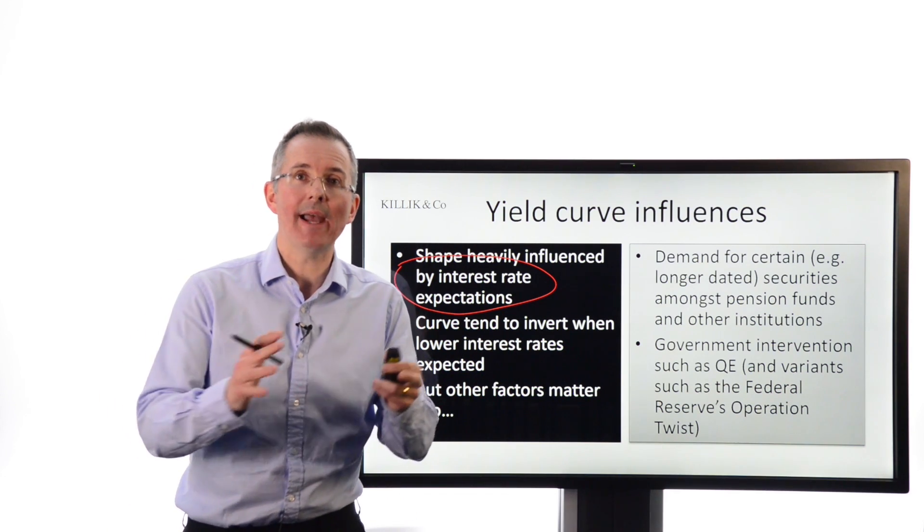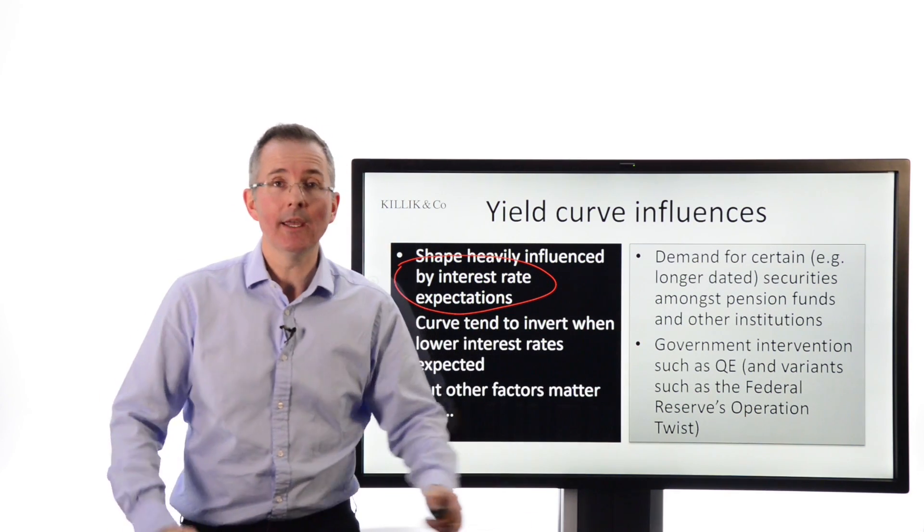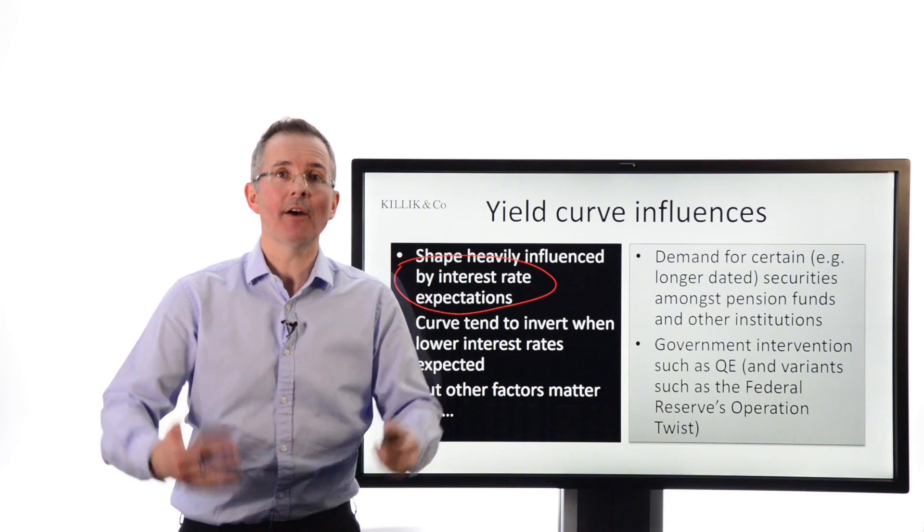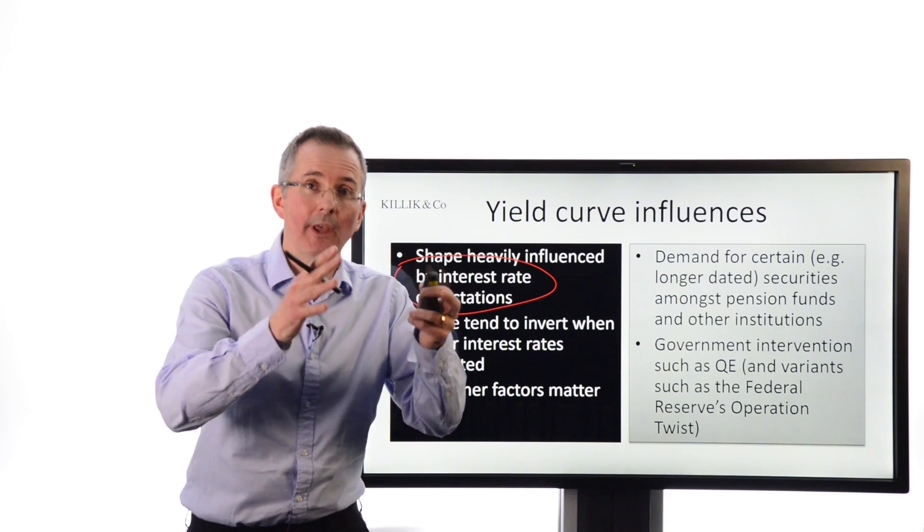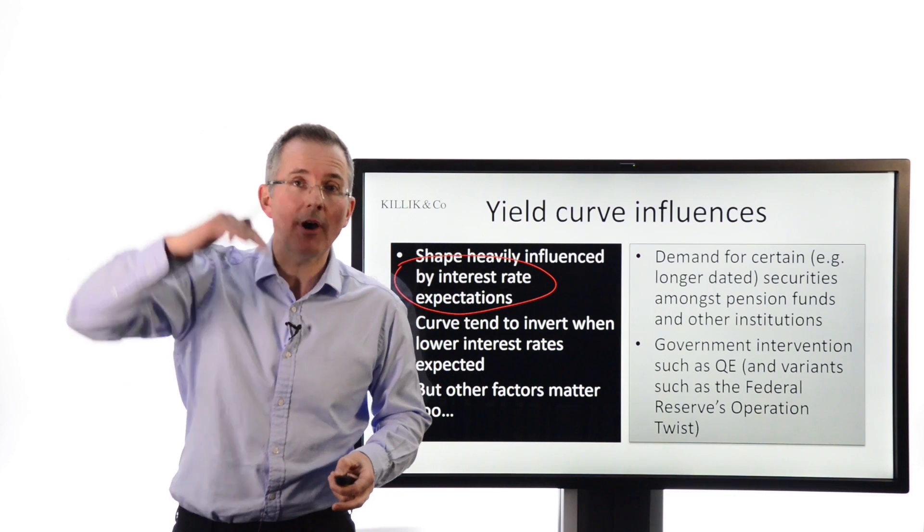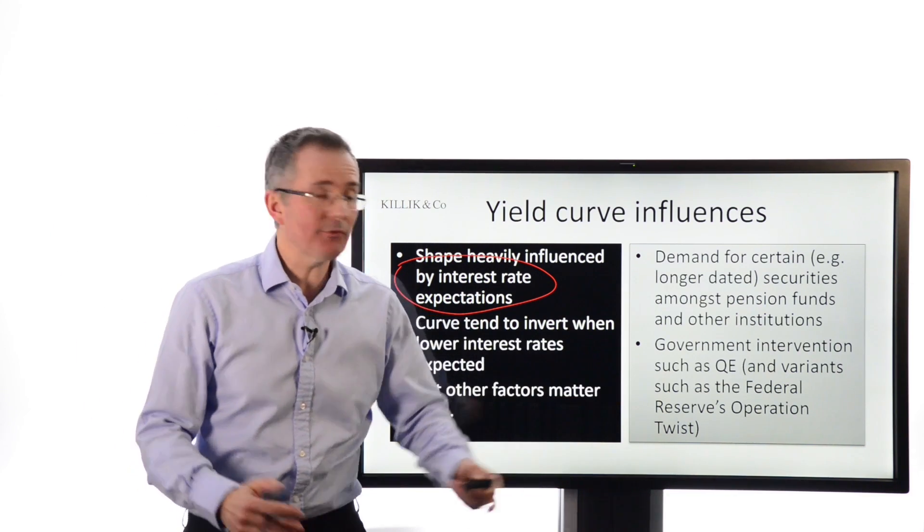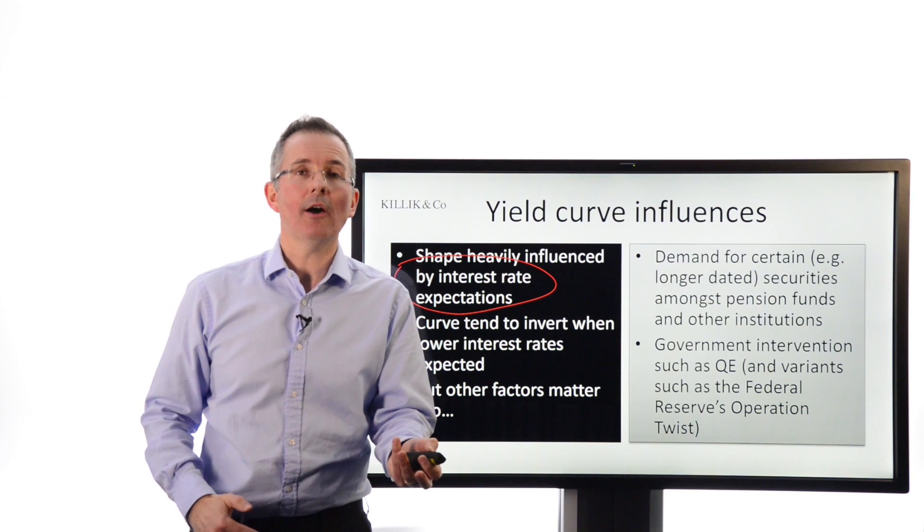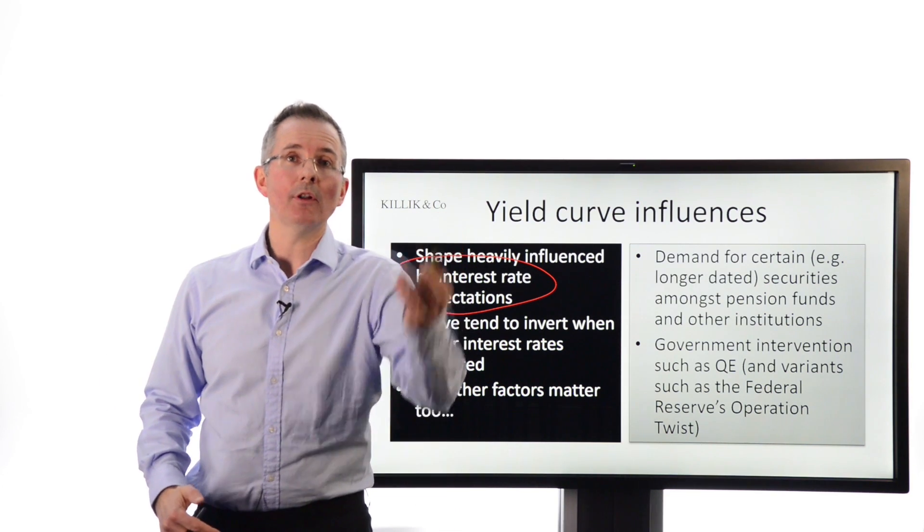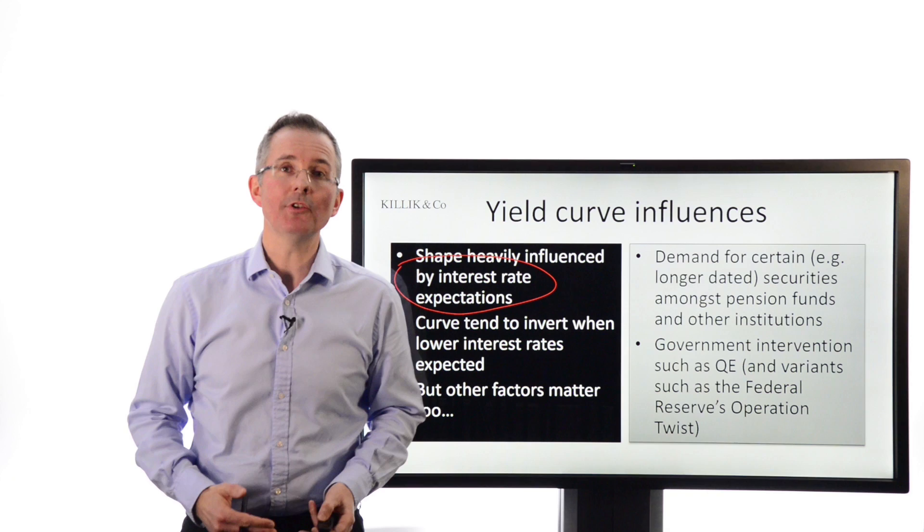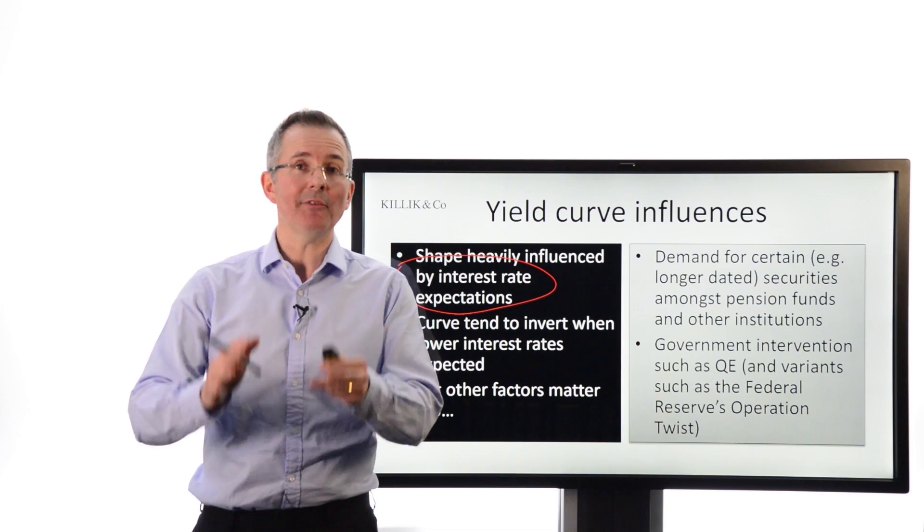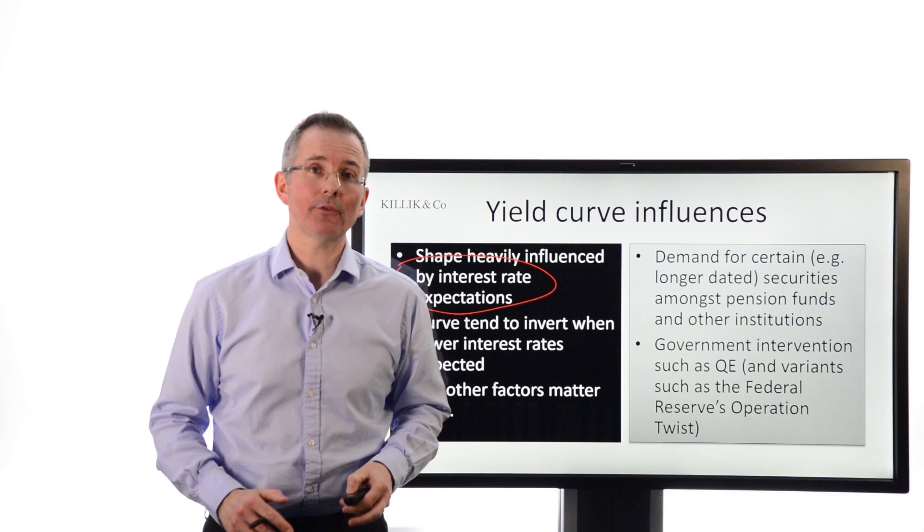And government intervention can do the same thing, depending on how and where governments intervene. So QE is a program where central banks buy, essentially, government IOUs from their own governments. That's going to, depending on which ones they go for, push up prices, drive down yields. The Federal Reserve tried a thing called Operation Twist, where it basically sold short-dated IOUs and bought longer-dated, in an attempt to move the shape of the curve. So government influence is always worth bearing in mind. And we've seen increasing amounts of that in the last few years.